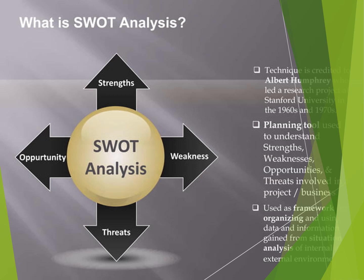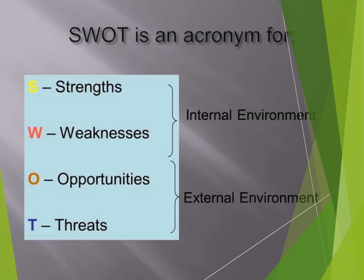We discuss opportunities and threats in the market. S stands for Strength, W for Weakness, O for Opportunity, T for Threat. Two factors — strength and weakness — are internal, focusing on the internal environment. The other two — opportunity and threat — focus on the external environment.